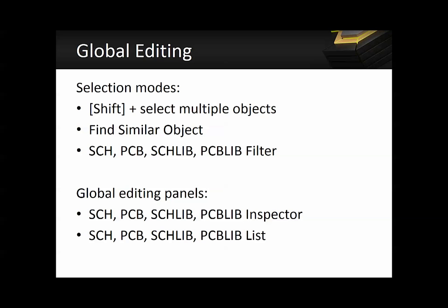To perform global editing in Altium Designer, you would first need to select the multiple objects and then perform the global editing on the selected objects. One of the easiest selection modes is using the Shift key — holding the Shift key on your keyboard and then making multiple clicks with your mouse to select multiple objects.